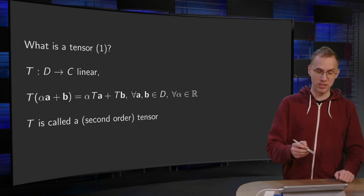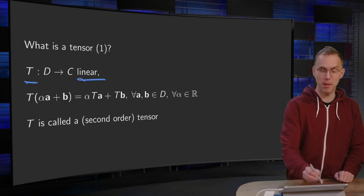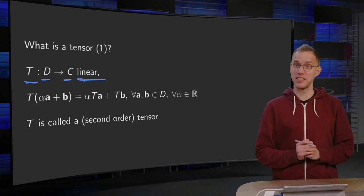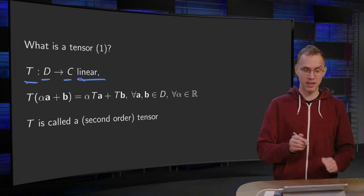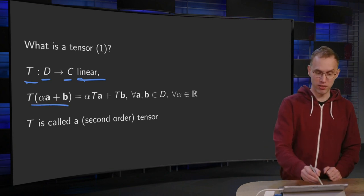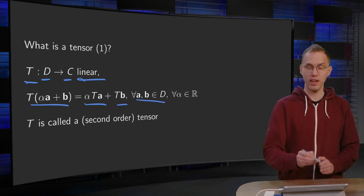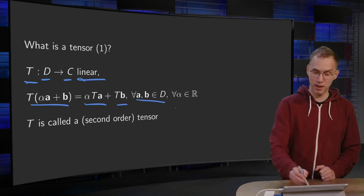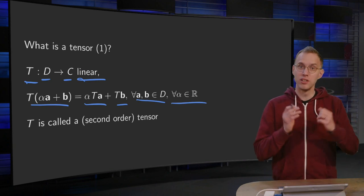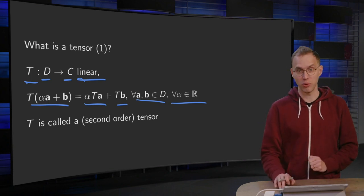So tensor T for now is a linear mapping from a domain D to a codomain C. So what does this mean? The T of alpha A plus B equals alpha times the T of A plus the T of B for all A and B in the domain D and for all scalars alpha. In such a case, T is called a tensor or a second order tensor.